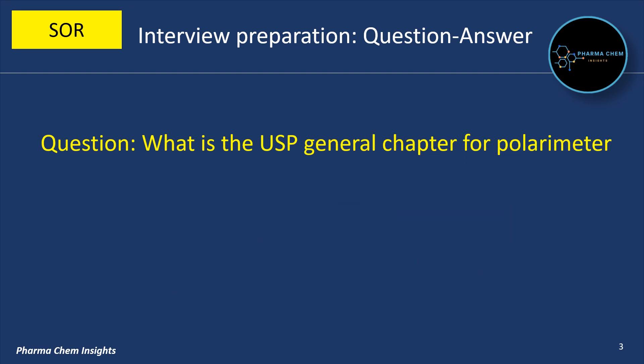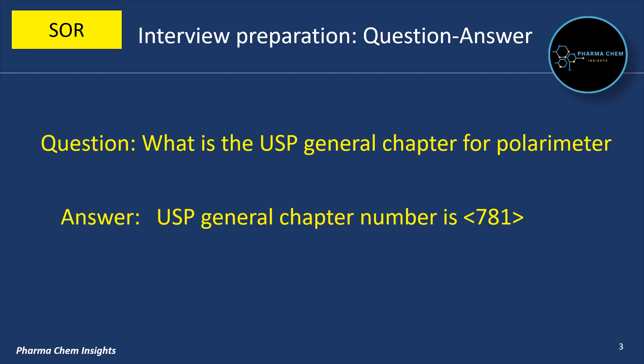What is the USP General Chapter for polarimeter? The USP General Chapter number for polarimeter is 781.